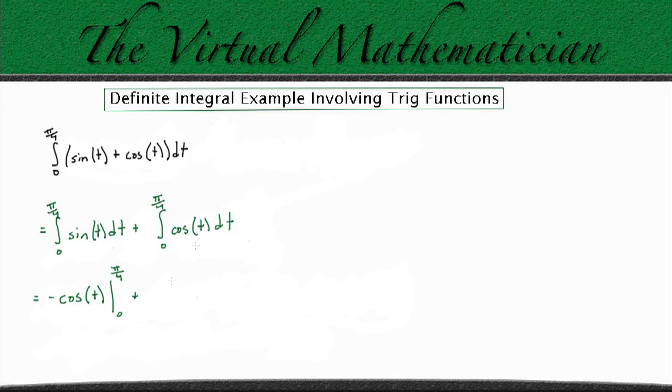So we know the integral of cosine is sine, so this is going to leave us with plus sine of t evaluated from 0 to pi over 4.